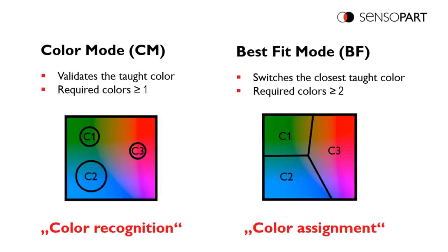In color mode, you teach a color and then set a tolerance. You can see that C1 has a narrow tolerance and C2 has a larger tolerance.